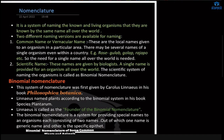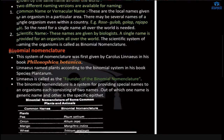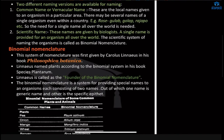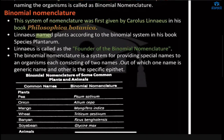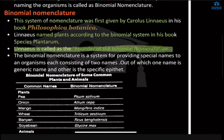For example, Pisum sativum — if I say Pisum sativum, it is the same name all over the world. There are different vernacular and common names, so to avoid confusion we use scientific names. Binomial nomenclature means a two-name system. This system of nomenclature was first given by Carolus Linnaeus in his book Philosophia Botanica. Linnaeus named plants according to the binomial system in his book Species Plantarum. Linnaeus is called the Father of Binomial Nomenclature because he was the first one to give this system.